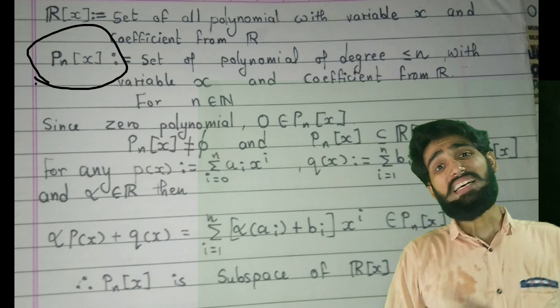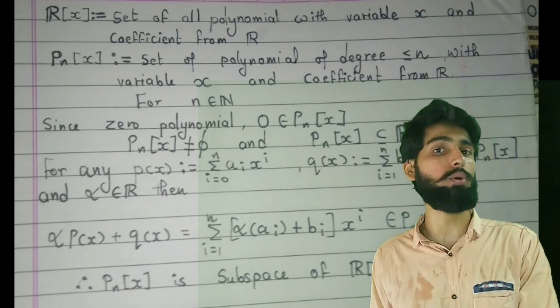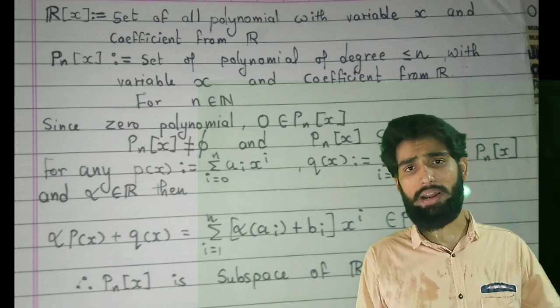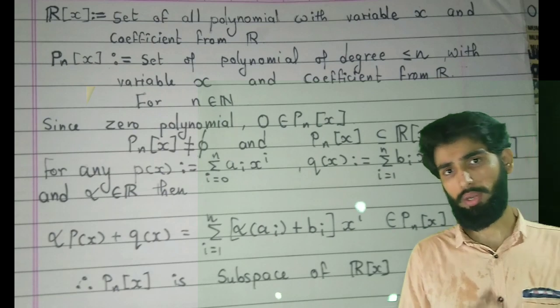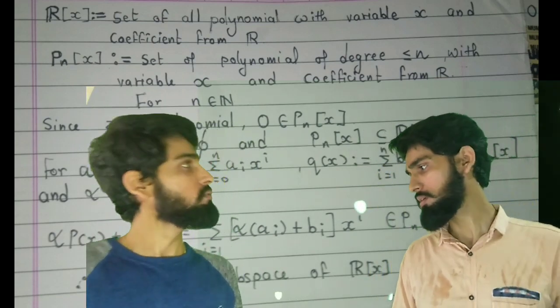P_n[x] which is defined as set of all polynomials of degree less than or equal to n, where the coefficients are coming from R and the variable is x.